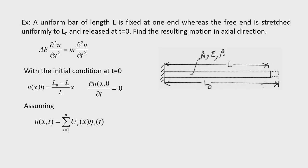Now let us take the second problem. A uniform bar of length L: one end is fixed, cross section is uniform with area A, modulus of elasticity E, and density ρ. The bar is given a uniform extension up to length L₀ (initial length was L). The distribution of stretching over the length L is written as ((L₀ − L)/L)×x, which is the initial displacement configuration at t = 0.